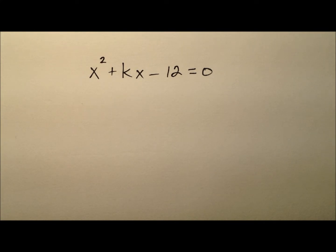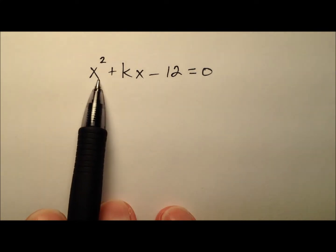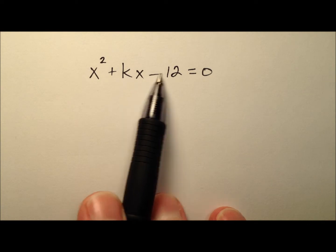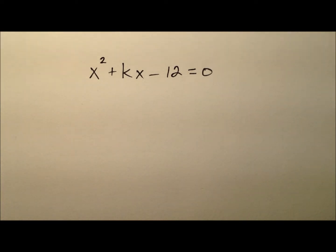In this example, we're going to take a look at the quadratic equation x² + kx - 12 = 0, and we would like to determine values for k that will result in this equation having integer solutions.